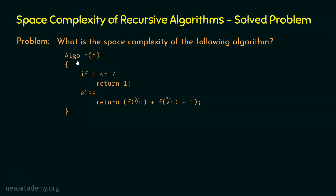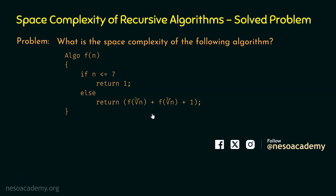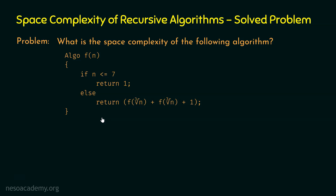We can observe in this algorithm that f of n is calling itself within its own body. Hence, f of n is a recursive function. Within this function, we can observe that we have two function calls, and these two function calls are the same. We are calling f of cube root of n two times. So from f of n, we are calling two functions. We haven't solved such a type of problem for finding the space complexity.